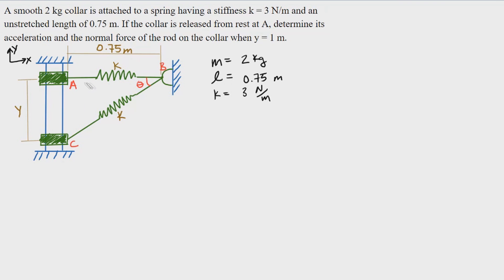Let me explain this picture. These are not two separate bodies — this is the state of the spring and the collar at point A, and then a moment later it's at point C. During that time the spring is stretched. Our goal is to find the normal force and how fast it is accelerating at point C when it has fallen distance y equals one.